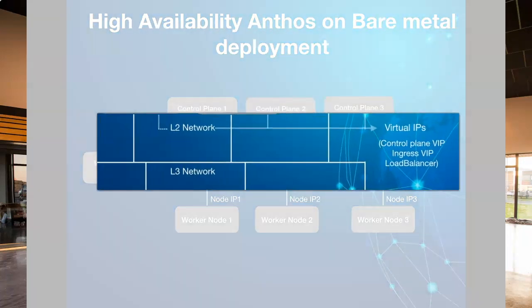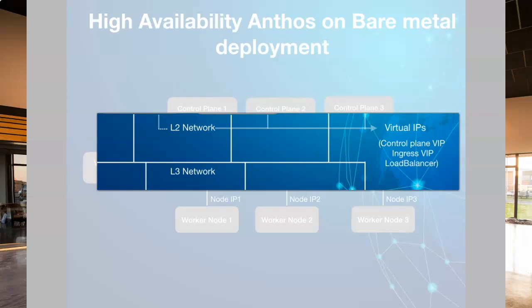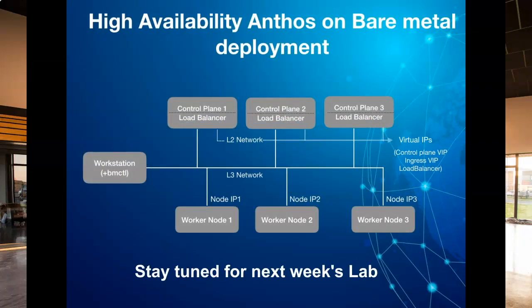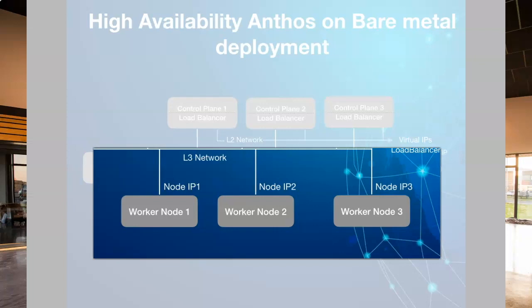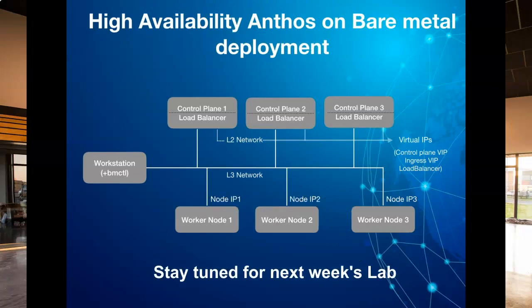You also need to configure virtual IPs for the control plane to send traffic to the Google Kubernetes Engine Kubernetes API server, and for Ingress for internal service invocation. The topology has three worker nodes for running your application workloads, configured for high availability and resiliency. The worker nodes have no restriction on L2 subnet and can reside in a regular L3 subnet. In next week's episode, we will deploy Anthos clusters on bare metal servers, go through the entire deployment process in detail, and deploy a sample application to demonstrate end-to-end functionality.